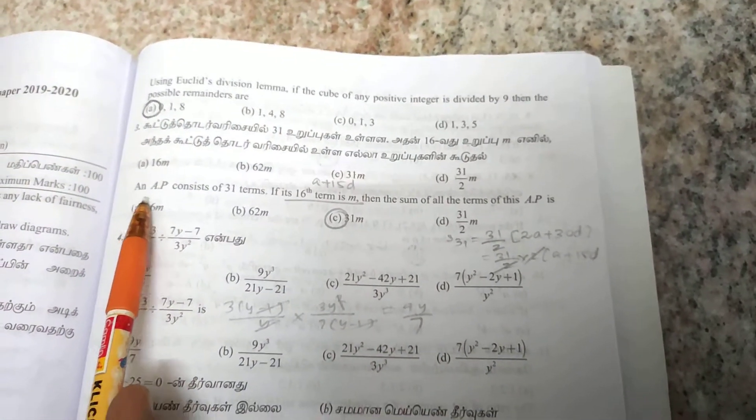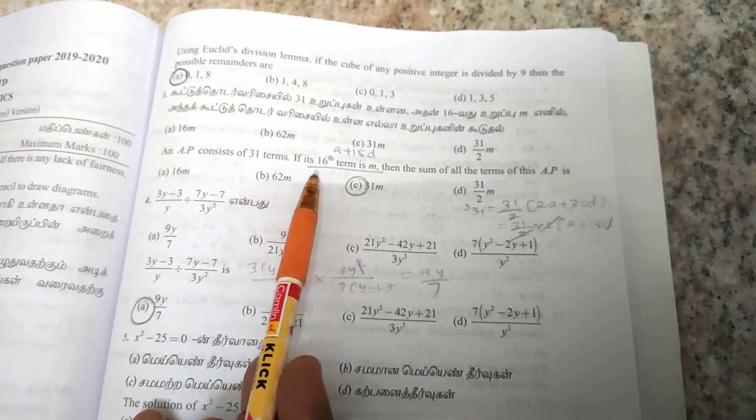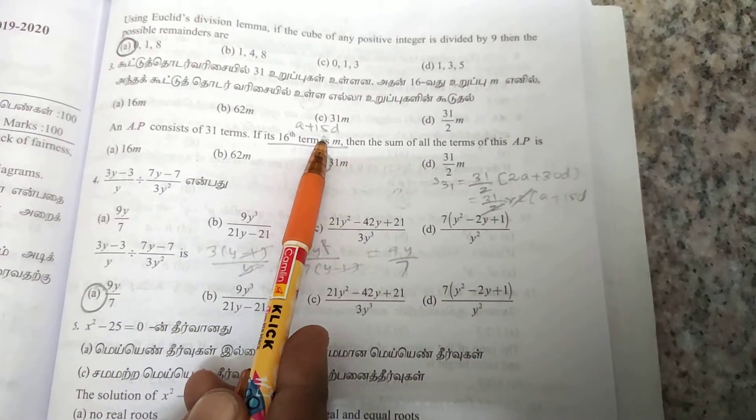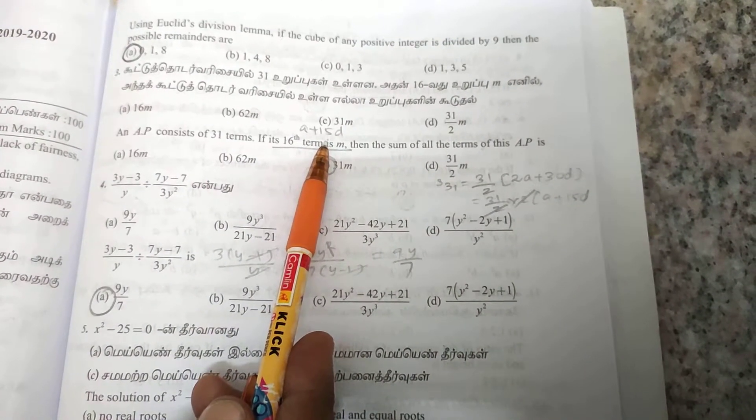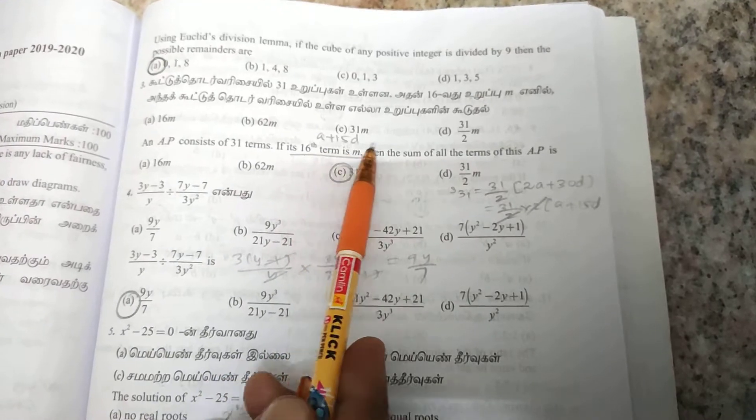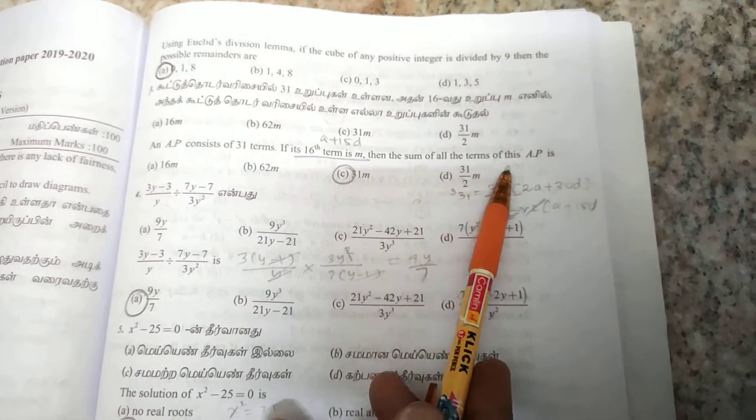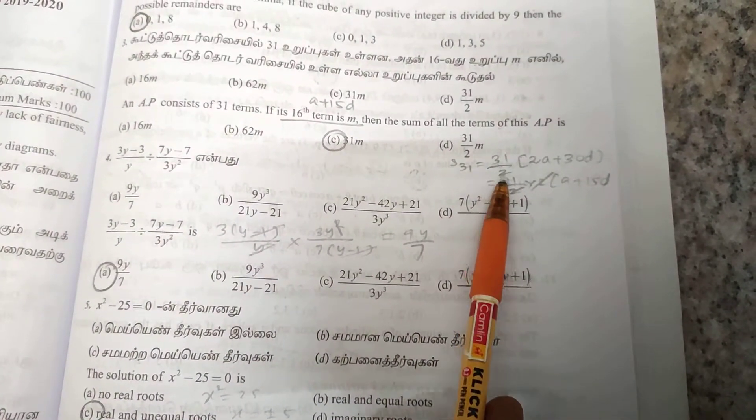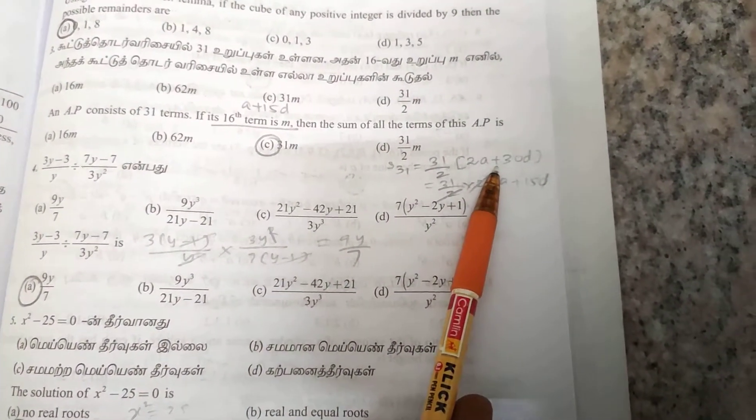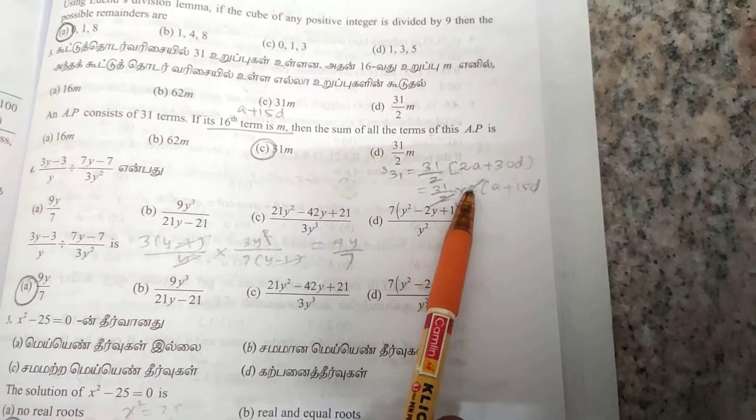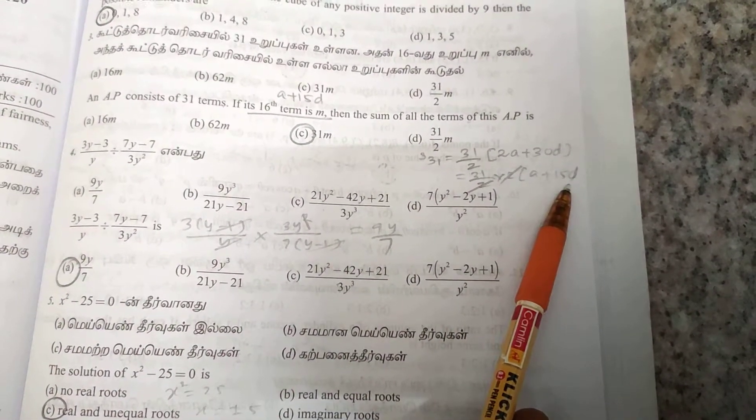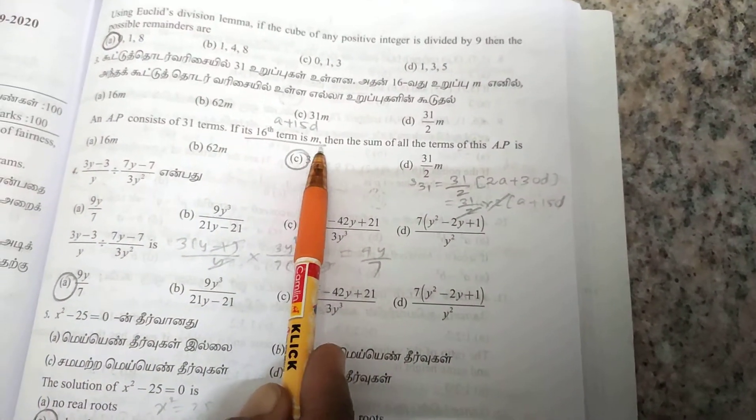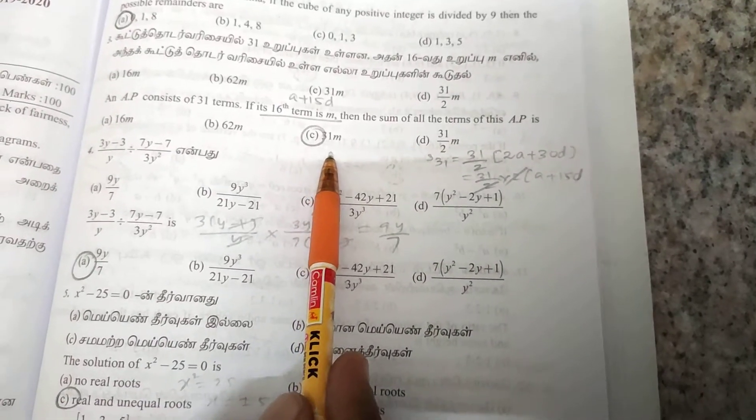An AP consists of 31 terms. If its 16th term is M, then the 16th term is a + 15d, since Tn equals a + (n-1)d. To find the sum of all terms, S₃₁ equals 31/2 times (2a + 30d). Taking 2 as common gives 31 times (a + 15d), which equals 31M. So the answer is option C.